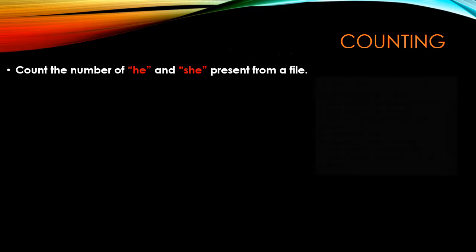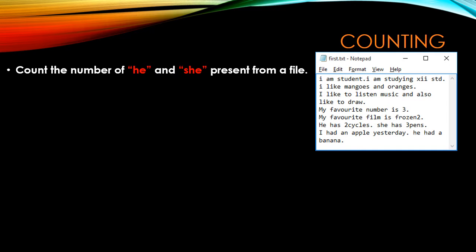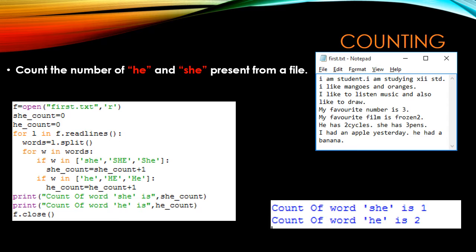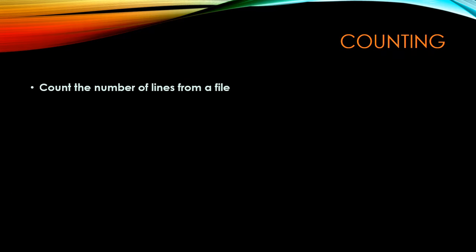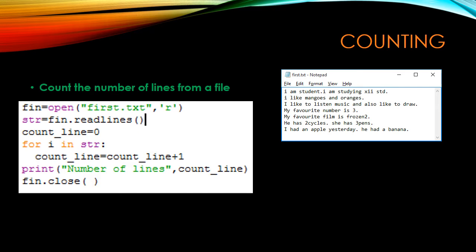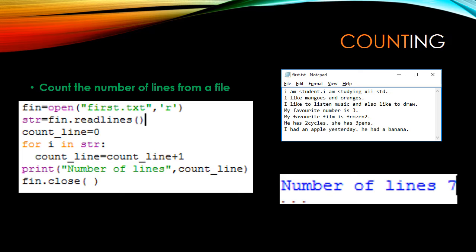Next, we count how many times 'he' is present and how many times 'c' is present in first_word.txt. We split lines into words and assign separate counting variables for 'c' counting and 'he' counting. If a match is found, the particular counting variable is incremented and finally displayed. We also count how many lines are present — reading lines one by one and incrementing a counter gives the number of lines.